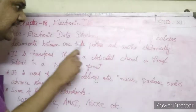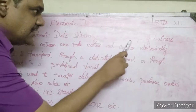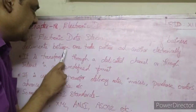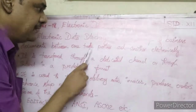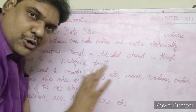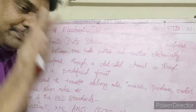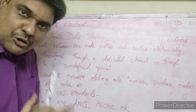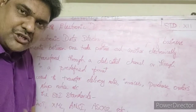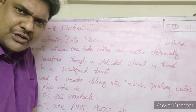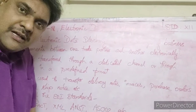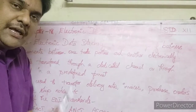EDI is the exchange of business documents between one trade partner and another electronically. Business documents include legal agreements, purchase orders, invoices, bills, and so on.